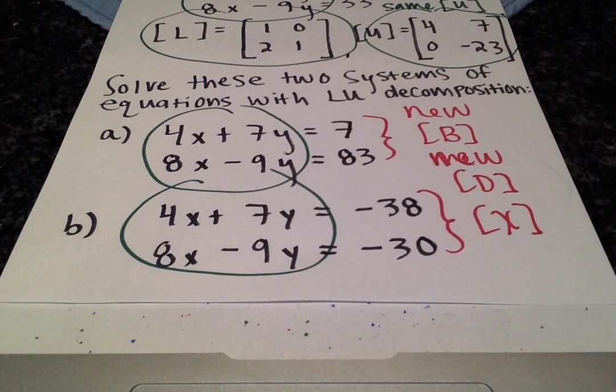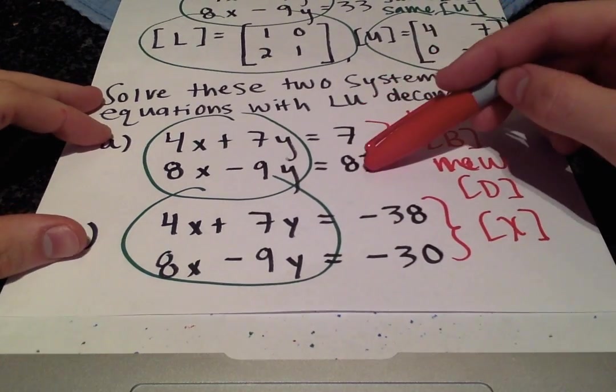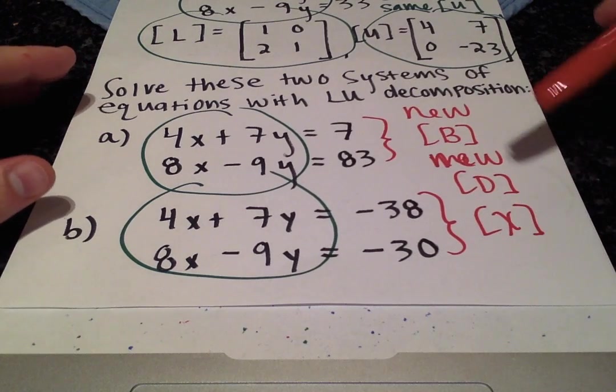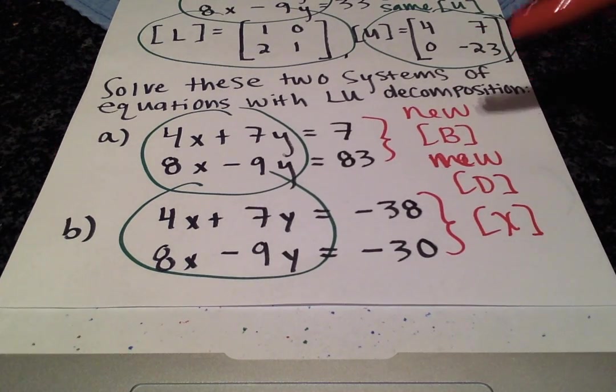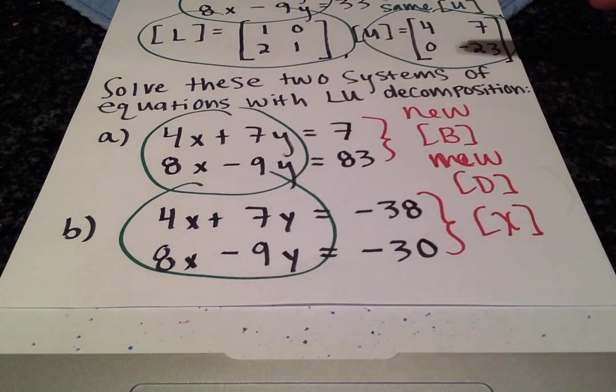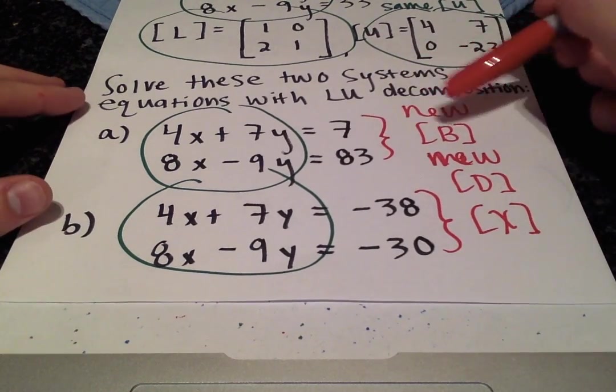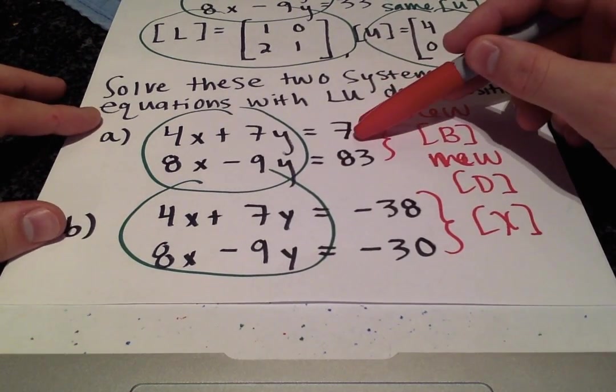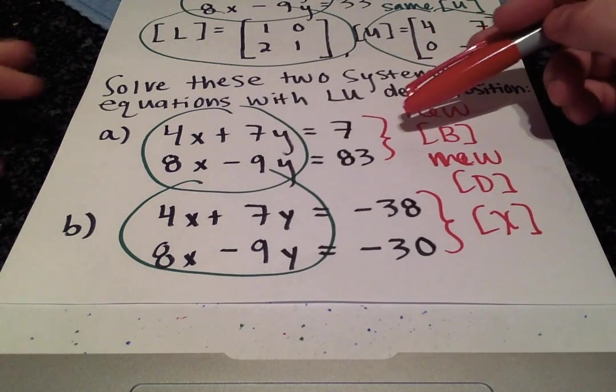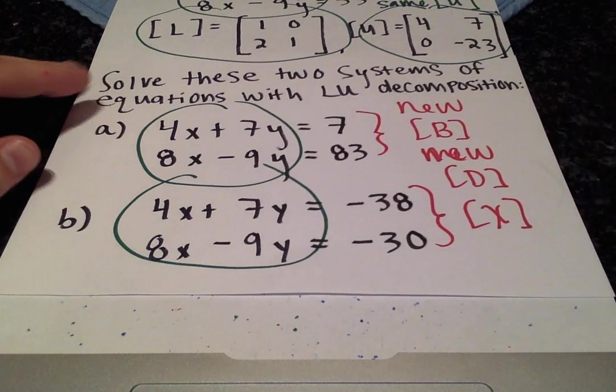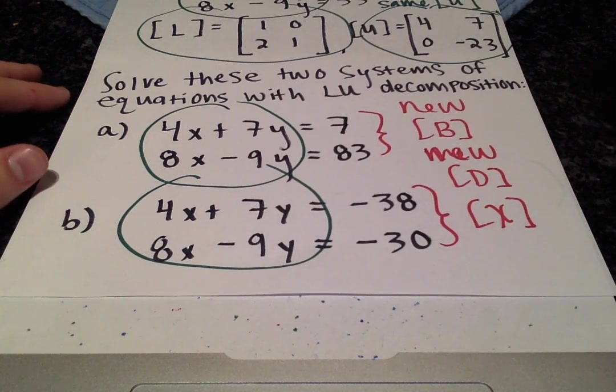You should be seeing right now that LU decomposition actually does have a unique application. If we're only changing the right-hand side of a system of equations, we can bypass solving for L and U because you only have to do that one single time. Now that the only part of this system of equation that is changing is the B vector, then we only have to perform the last two steps to solve for D and then solve for X.